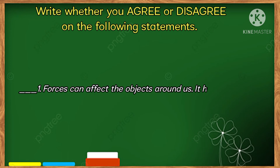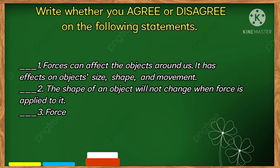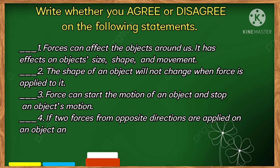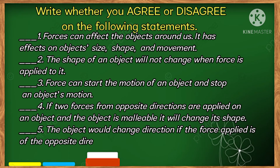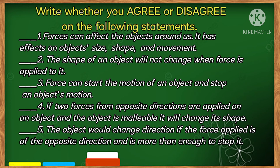Let us now check your understanding. Write whether you agree or disagree with the following statements. Number 1: Forces can affect the objects around us — it has an effect on object size, shape, and movement. Number 2: The shape of an object will not change when force is applied to it. Number 3: Force can start the motion of an object and stop an object's motion. Number 4: If two forces from opposite directions are applied on an object and the object is malleable, it will change its shape. Number 5: The object would change direction if the force applied is in the opposite direction and it is more than enough to stop it.